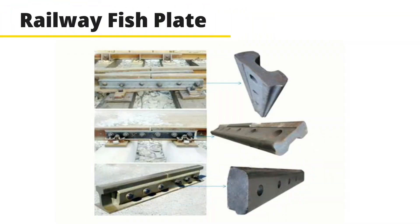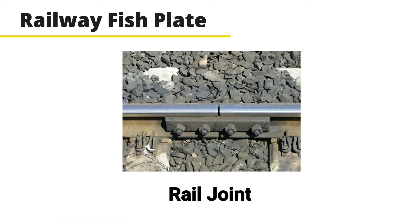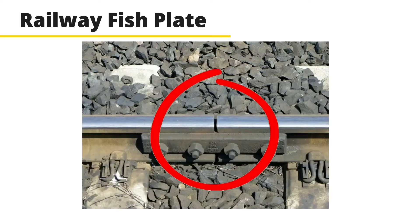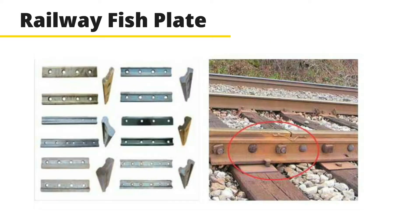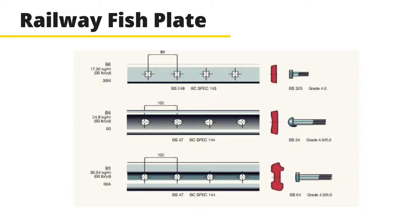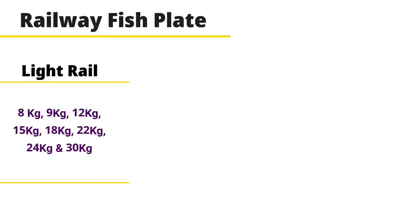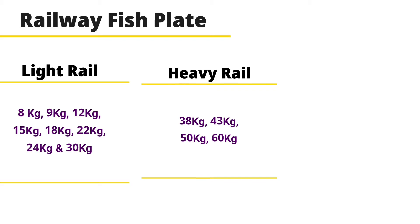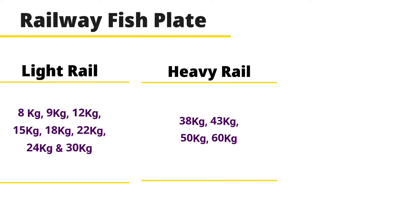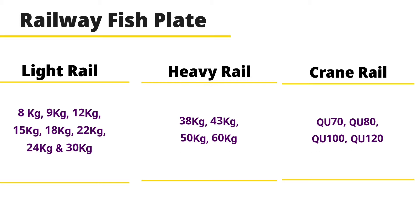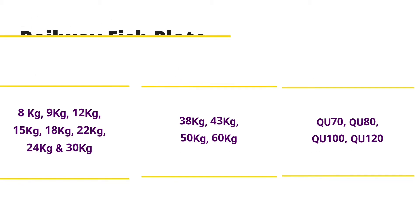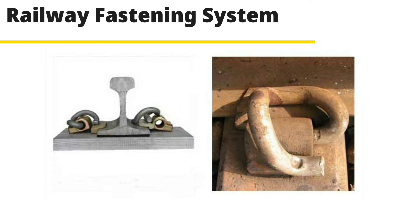The next component is the railway fish plate, also called a rail joint. It is used to connect the ends of two rails by fish bolts. According to steel rail standard, railway fish plates have three types. For light rail: 8 kg, 9 kg, 12 kg, 15 kg, 18 kg, 22 kg, 24 kg, and 30 kg. For heavy rail: 38 kg, 43 kg, 50 kg, and 60 kg. For crane rail: QU70, QU80, QU100, and QU120.